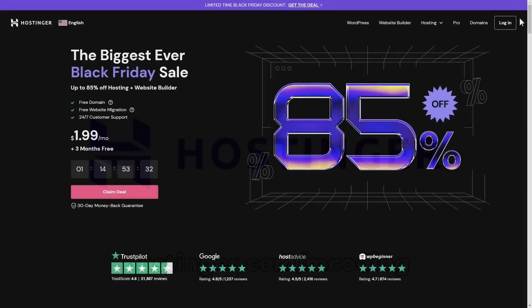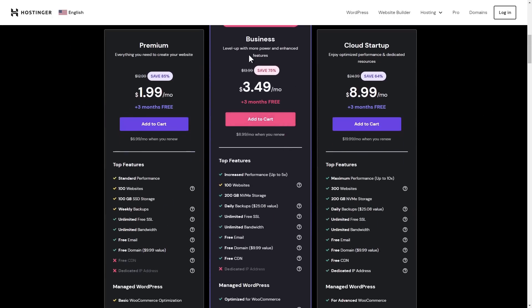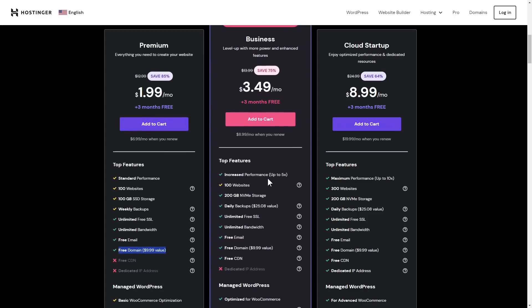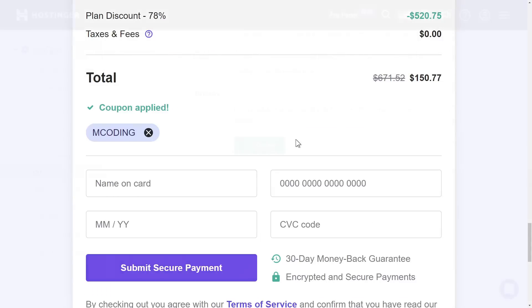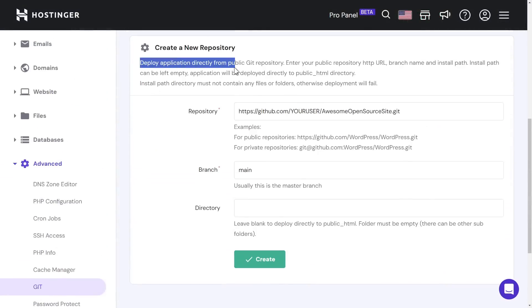Hostinger just happens to be running their biggest ever Black Friday sale where you can get their business plan for as little as $3.49 a month. If you just want to tinker, there's also the premium plan which goes as low as $1.99 a month and comes with everything you need to get started, like a free domain, email, and SSL certificates. But if you want to run a site with some real traffic, I recommend the business plan which additionally comes with increased performance and access to Hostinger's CDN. When you check out, make sure to use coupon code mcoding to get an additional 10% off on top of the Black Friday deals. Choose your free domain and use the website builder if you're a novice, or deploy your site straight from GitHub if you're a pro. And don't forget to use my custom link in the description to let them know that I sent you.